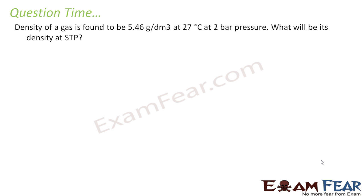The next question says, density of gas is found to be 5.46 gram per dm³ at 27 degrees Celsius at 2 bar pressure, what will be the density at STP? So, pretty straightforward question, we have the formula, density is equal to mP by RT.